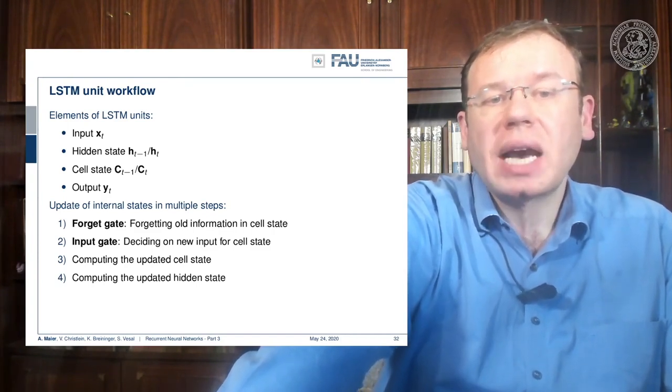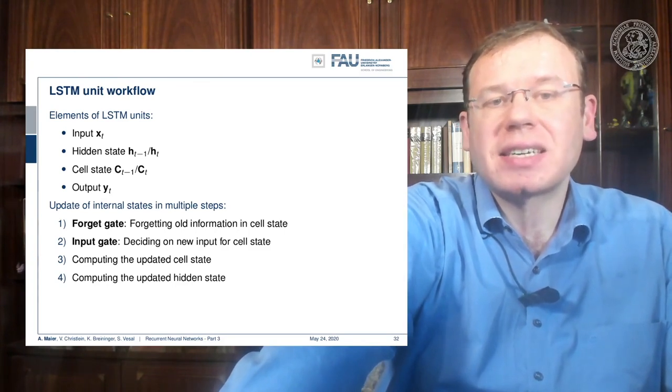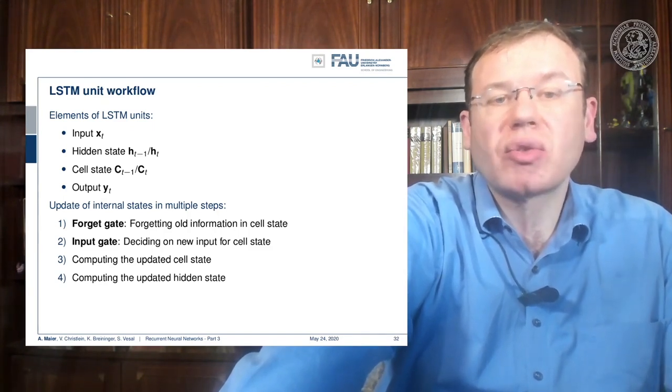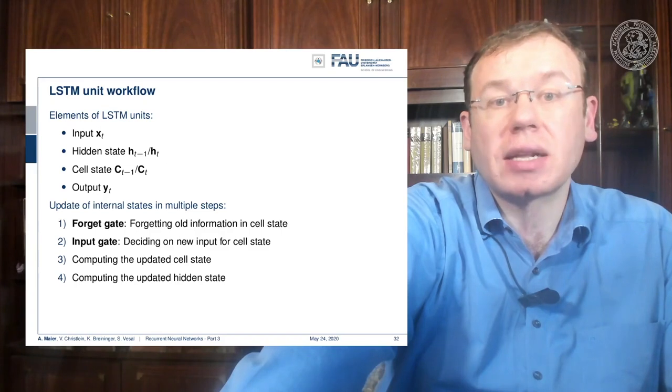Now we have several gates and the gates essentially are used to control the flow of information. There's a forget gate and this is used to forget old information in the cell state.